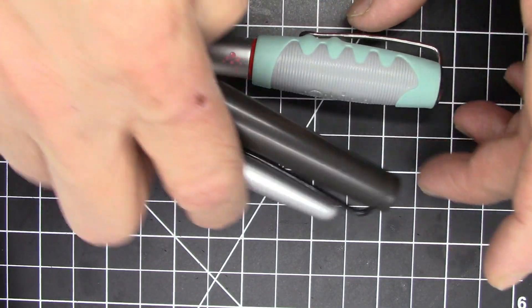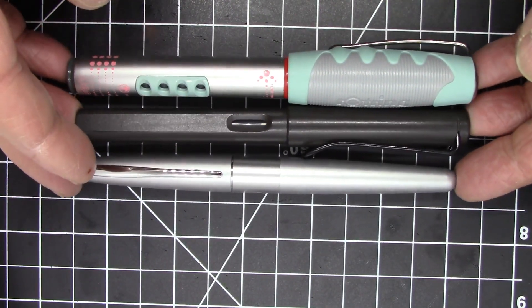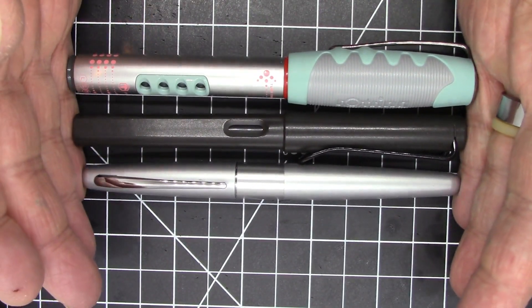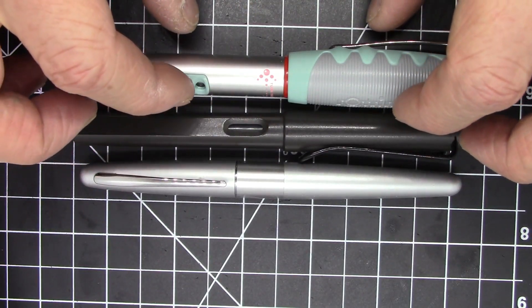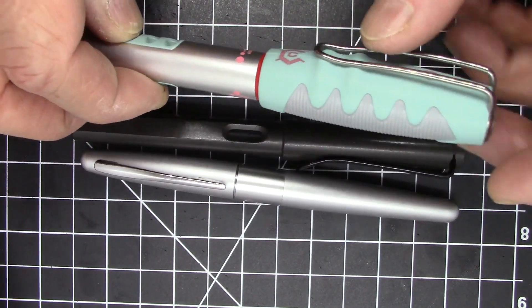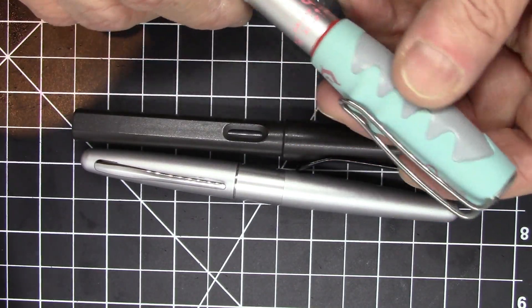So first of all, let's get a little bit of a size on it. Here it is compared to a Lamy Safari and a Pilot Metropolitan. So you can see lengthwise it's fairly conventional. The body is a little bit girthy and the cap is just insanely girthy.